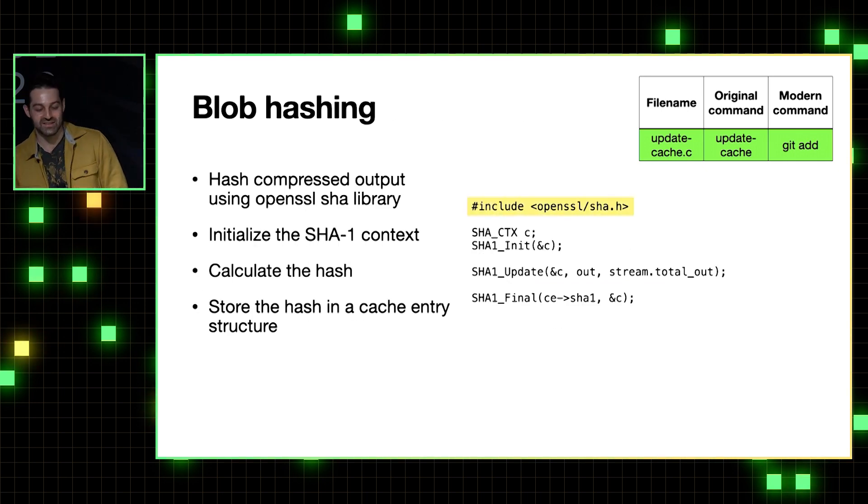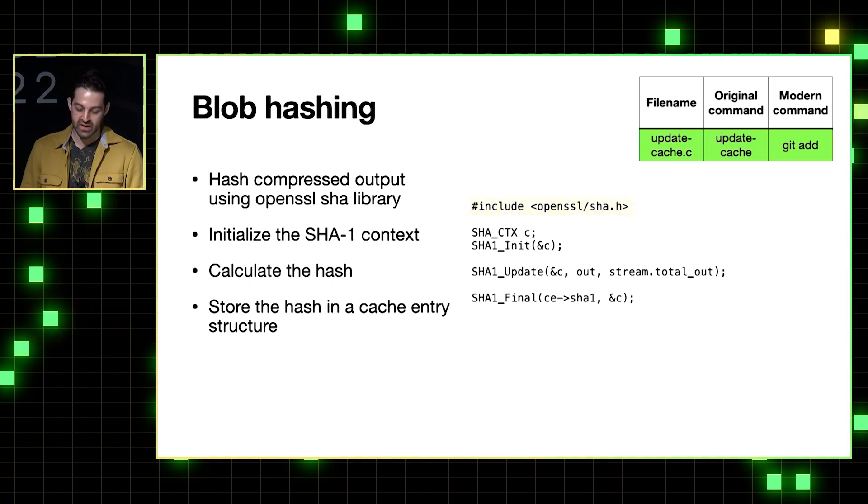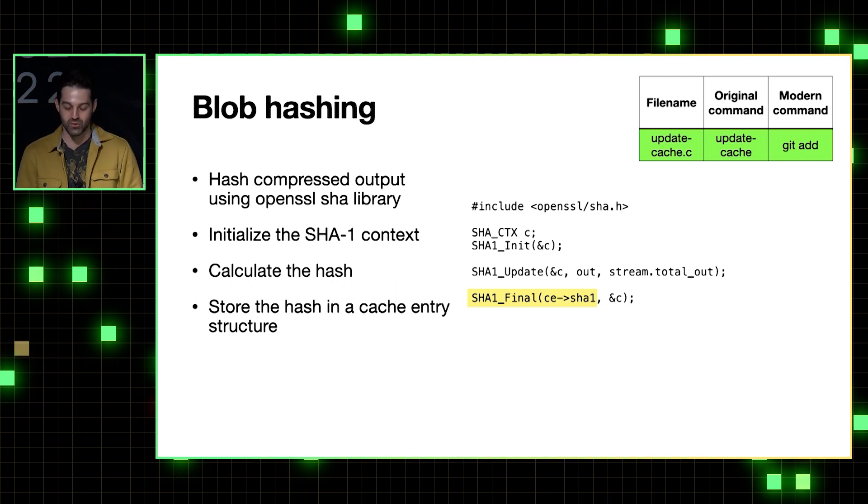So next, Git's code calculates the SHA1 hash of the compressed data using the open SSL SHA library. And pretty much all the work for this is done by the SHA1 update function, which actually calculates the hash. And SHA1 final here just takes that hash and puts it somewhere, in this case in something called the cache entry structure, which we'll talk about more in a minute.